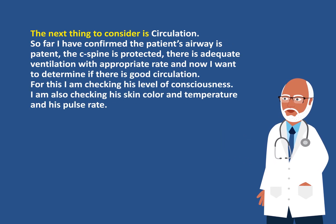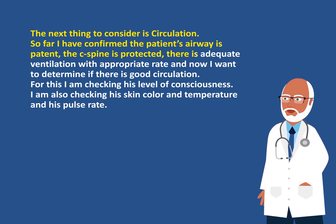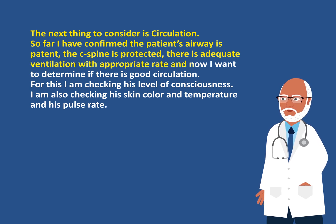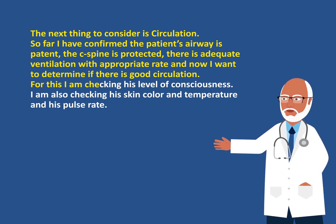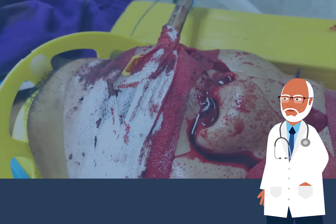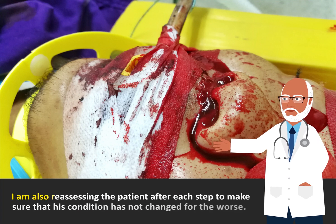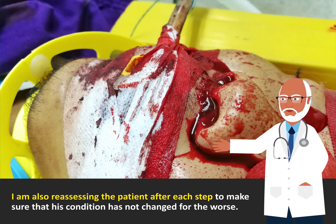The next thing to consider is circulation. So far, I have confirmed the patient's airway is patent, the C-spine is protected, and there is adequate ventilation with appropriate rate. Now I want to determine if there is good circulation. For this, I am checking his level of consciousness, his skin color and temperature, and his pulse rate. If there is bleeding, hemorrhage should be controlled and volume restored by giving fluid or blood. I am also reassessing the patient after each step to make sure his condition has not changed for the worse.